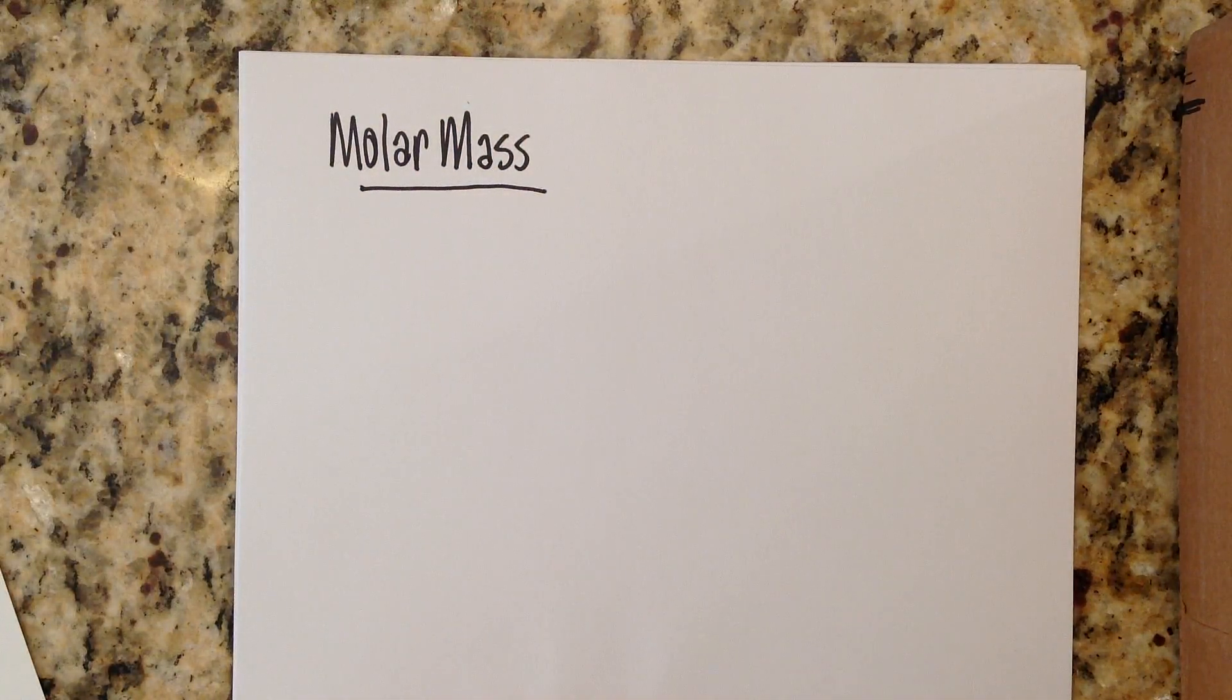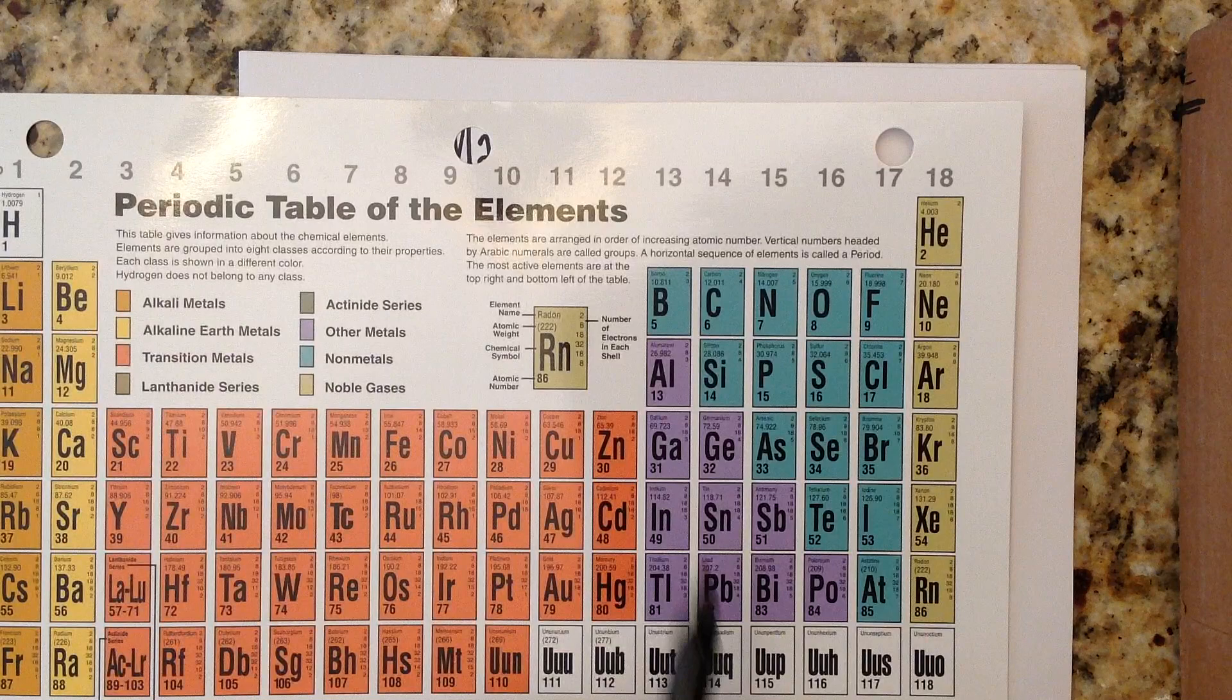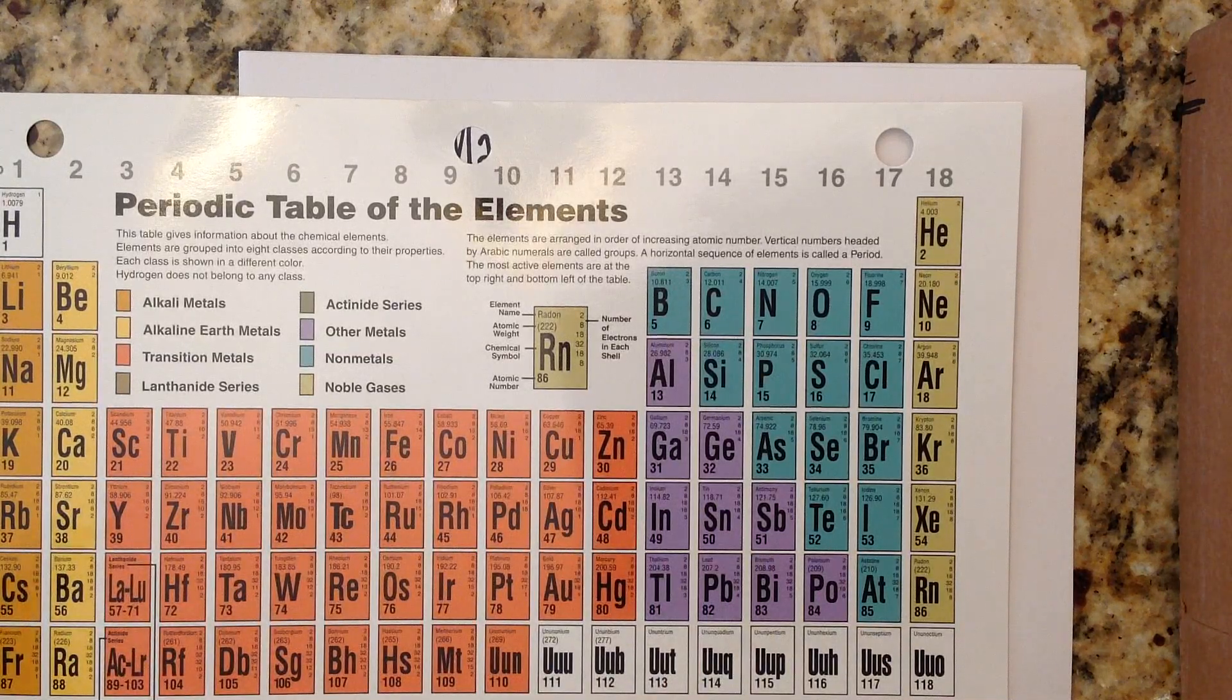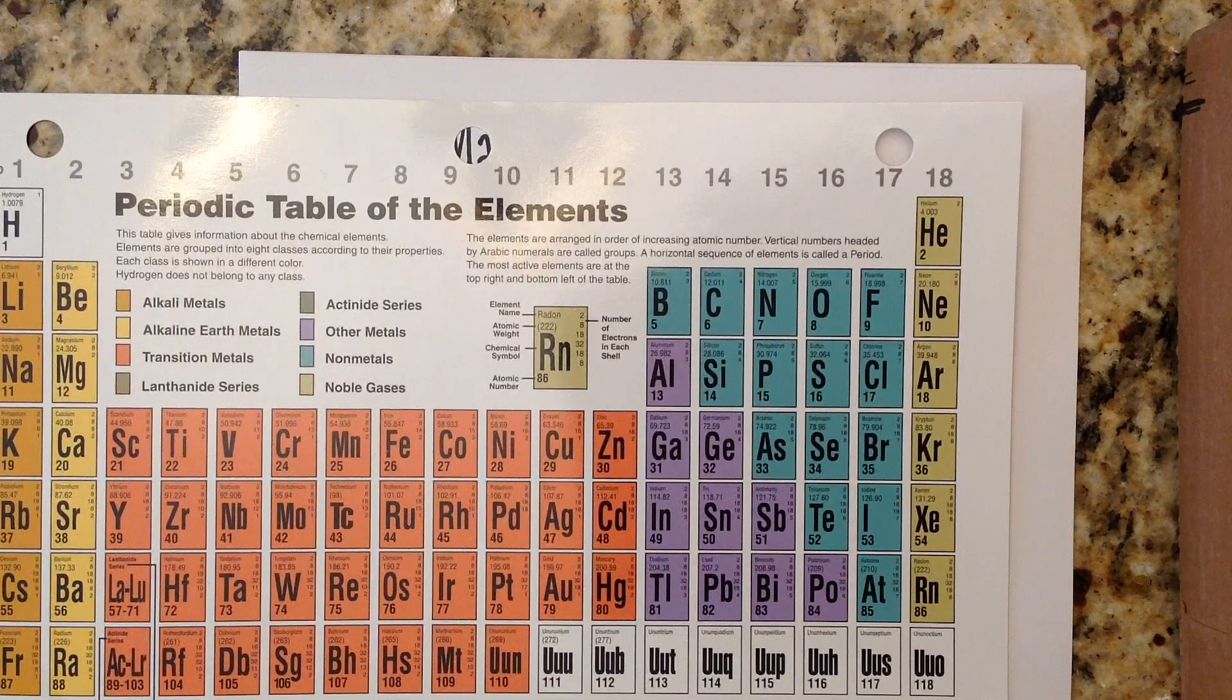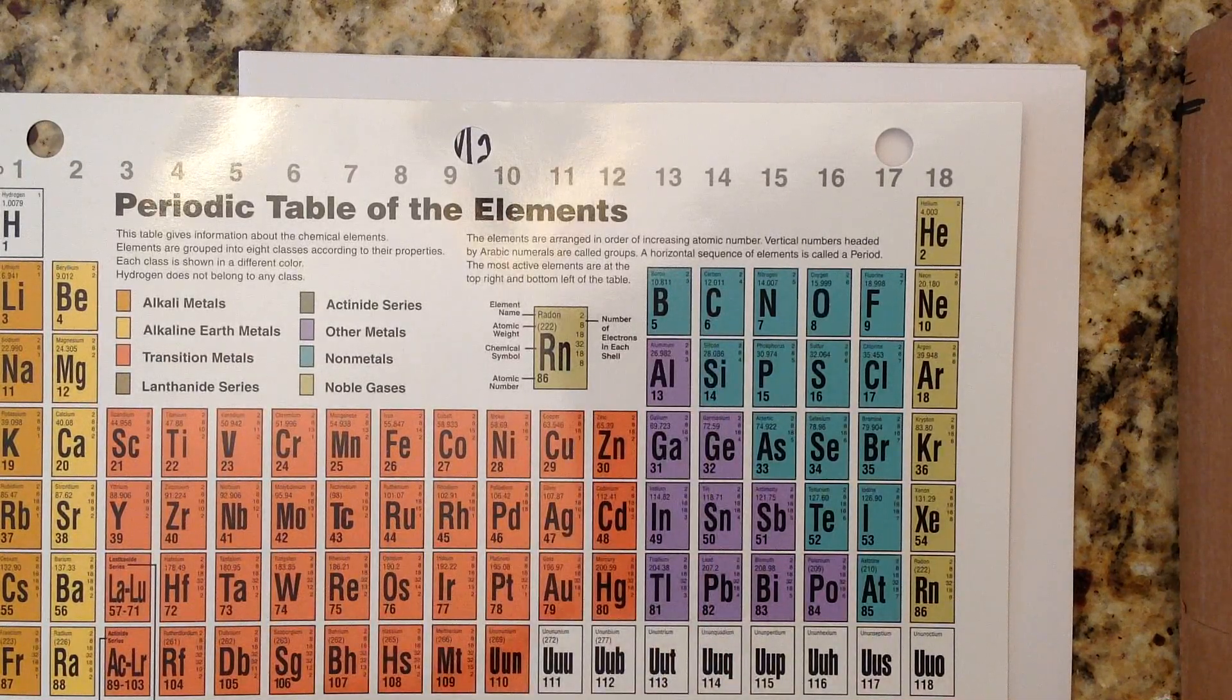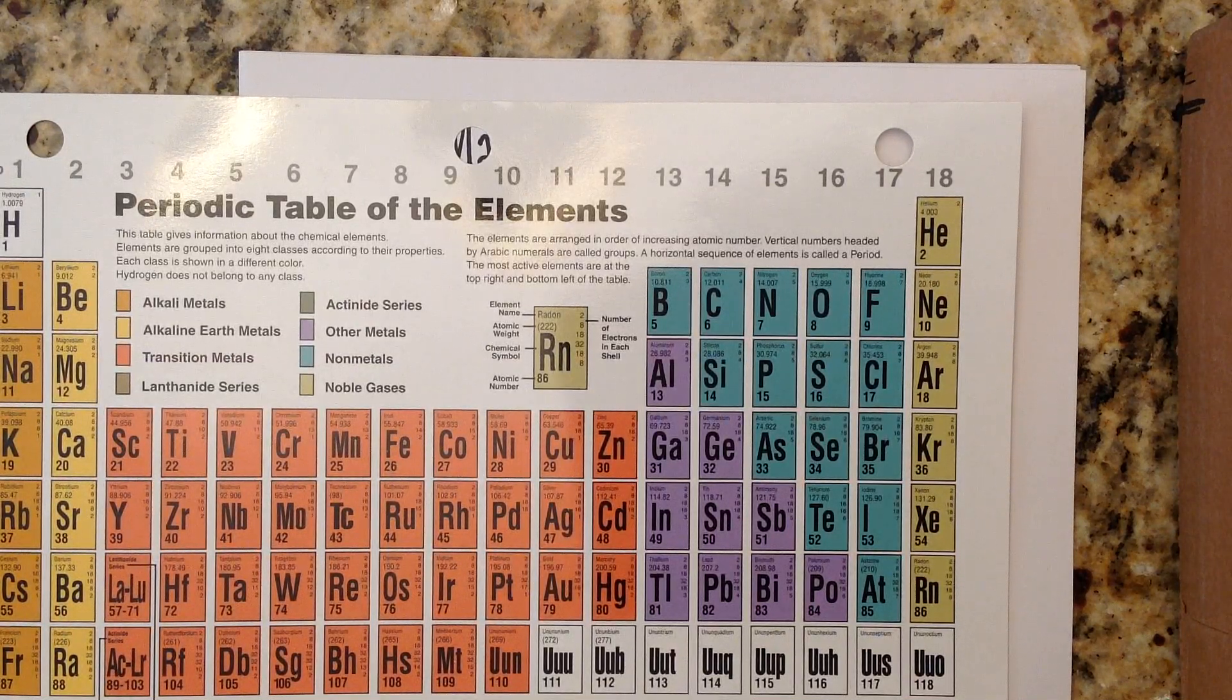Now we already know that we can look at the periodic table and we can find the molar mass for any element simply by looking at the mass. For example, aluminum is 26.98 grams per mole. That means one mole of aluminum atoms has a mass of 26.98. The molar mass of carbon is 12.01 grams per mole. So if you have one mole of carbon atoms, that should have a mass of 12.01 grams. So we refer to this as molar mass.